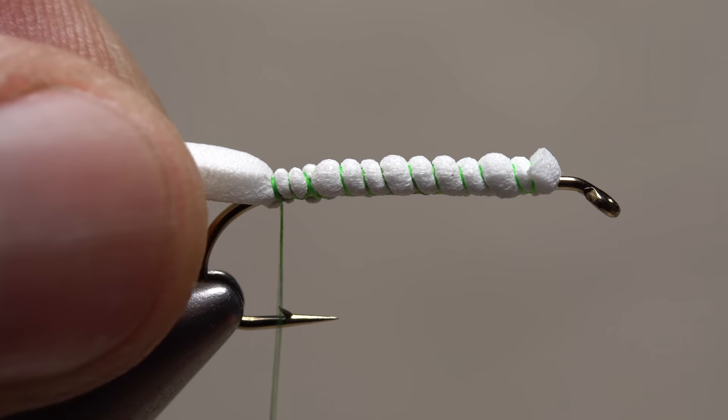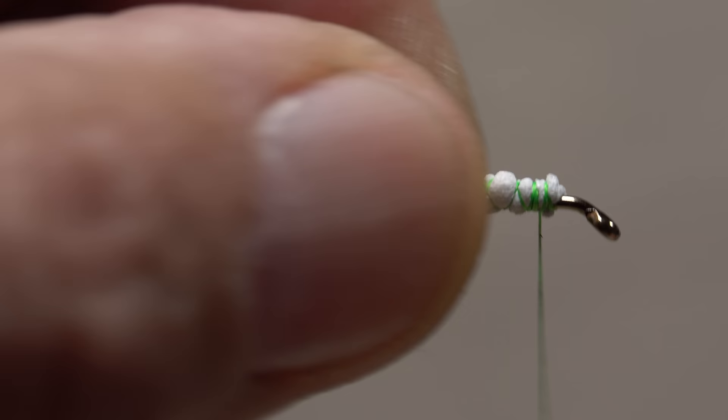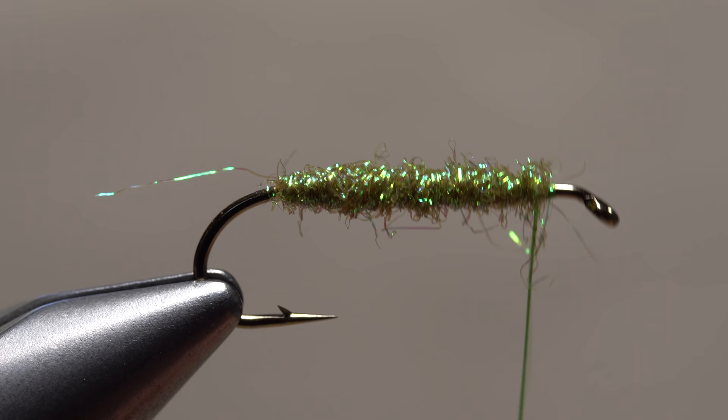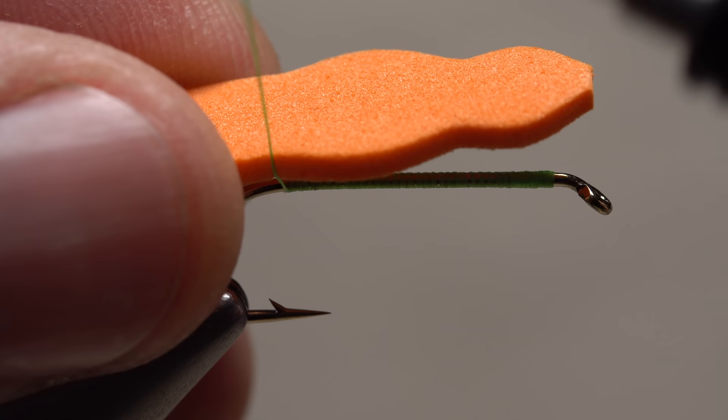To further prevent slippage, you can add an additional slender piece of foam and bind it down really well both up and down the shank. Any foam placed over top of this will slip very little if at all. You can pretty much do the same thing by covering the shank with dubbing, which also makes the fly look more appealing from below.